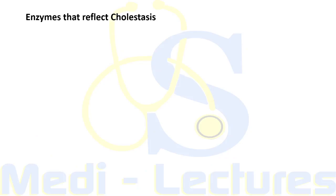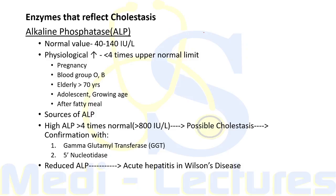The enzymes reflecting cholestasis include alkaline phosphatase (ALP), 5-nucleotidase, and gamma-glutamyl transferase (GGT). The normal value of ALP is 40 to 140 IU/L. Physiological elevation (less than four times the upper normal limit) can be seen in pregnancy, blood groups O and B, elderly individuals over 70 years, adolescents in growing age groups, and after a heavy or fatty meal.